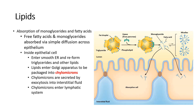Inside the cell, the fatty acids and monoglycerides are going to repackage themselves into triglycerides at the smooth ER. From the smooth ER, they make their way to the Golgi apparatus, which is like the post office of the cell. Here, they're going to be repackaged into another type of molecule called a chylomicron. The chylomicrons are then secreted by exocytosis into the interstitial fluid, and make their way via the lacteal into the lymphatic system.